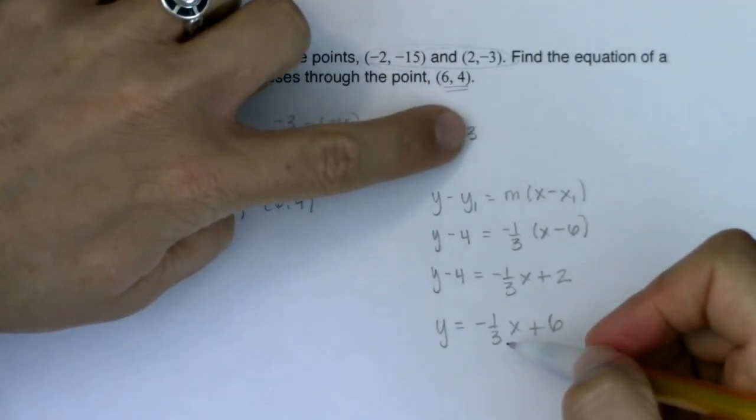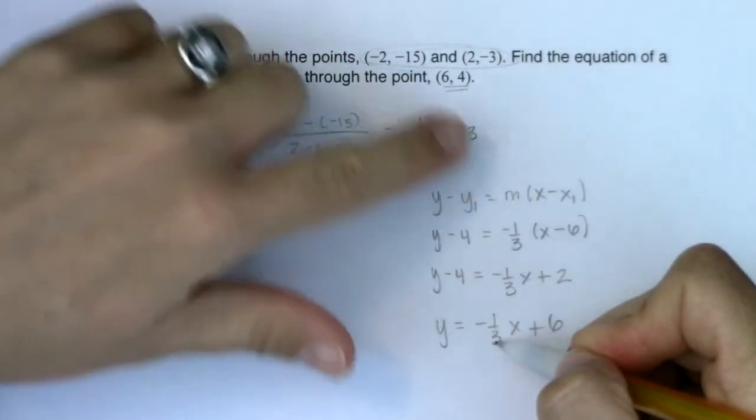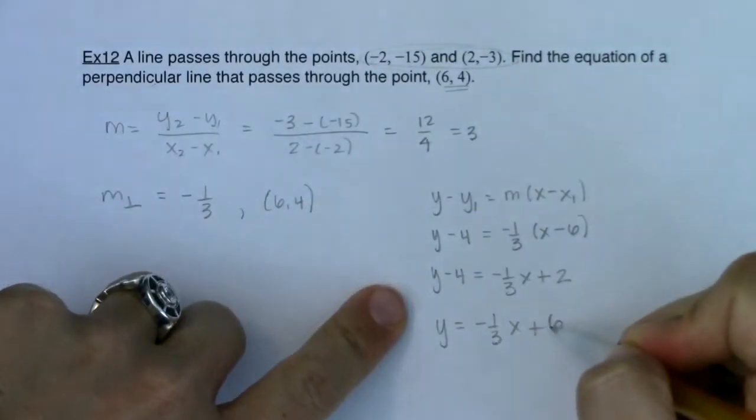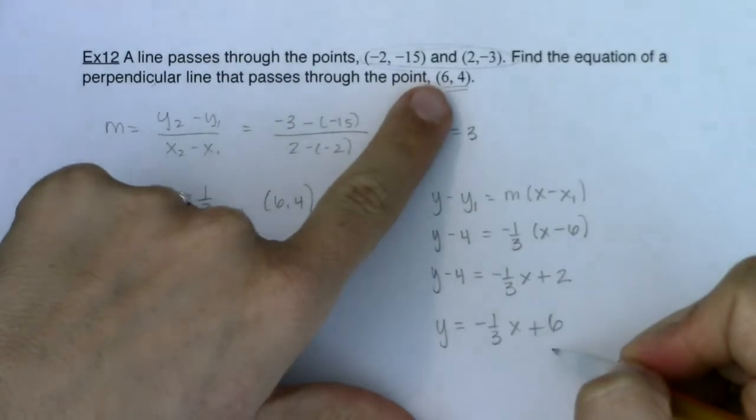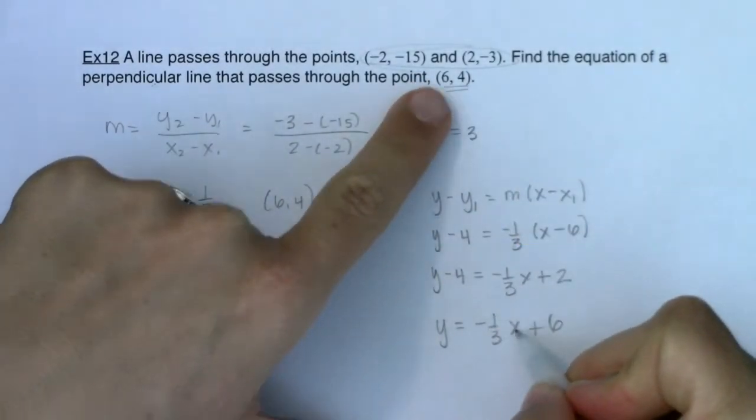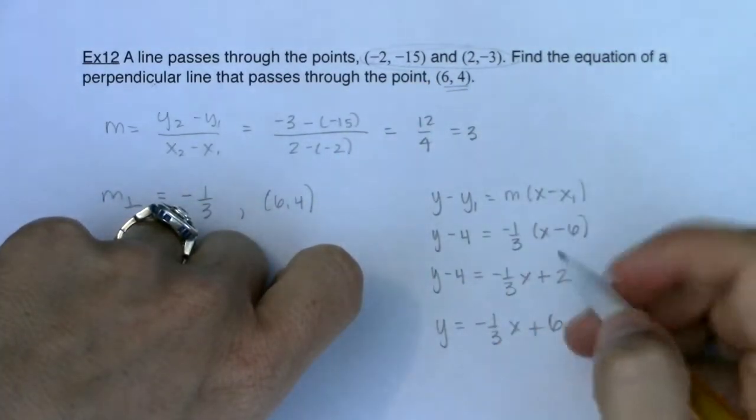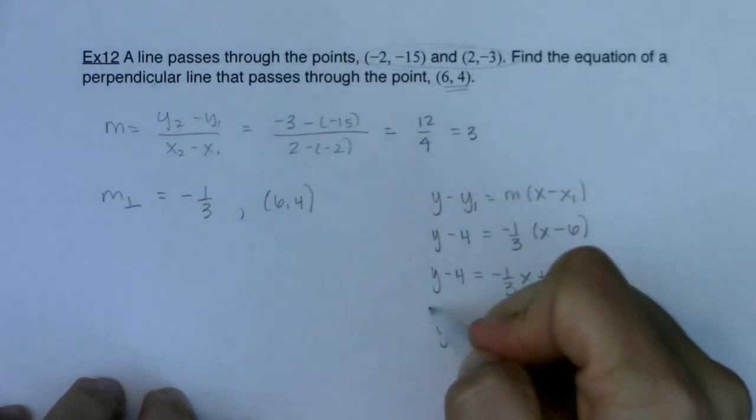My slope originally was 3, so this negative reciprocal slope does mean these two lines are perpendicular. That's great. Does this equation pass through (6, 4)? Let's test it out. (-1/3) times 6 would be -2. (-2) plus 6 would give me 4. So this is the correct line.